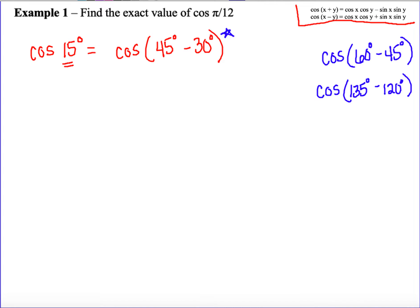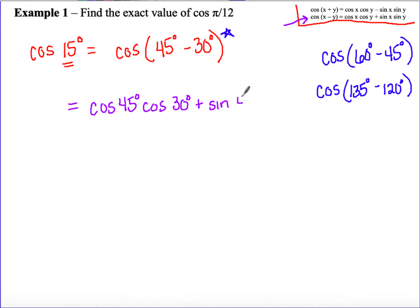Let's expand using the formula. We have the cosine of two angles subtracted, so we use the cosine difference identity: cosine of 45 degrees times cosine of 30 degrees plus sine of 45 times sine of 30 degrees. The formula takes care of the sign automatically — we don't need to worry about a negative 30. Now we'll evaluate each: cosine of 45, cosine of 30, sine of 45, and sine of 30.